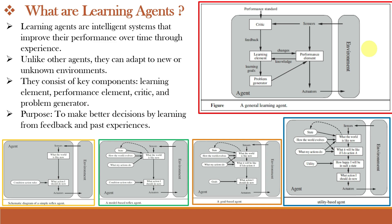From the PEAS framework, every agent has P — Performance, which measures the success of an agent's behavior; E — Environment, where the agent operates; A — Actuators, using which the agent acts in its environment; and S — Sensors, using which the agent senses the environment. The environment, actuators, and sensors are present for all agents. They differ only in performance.